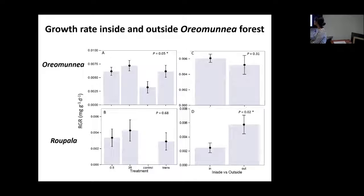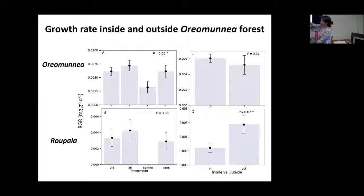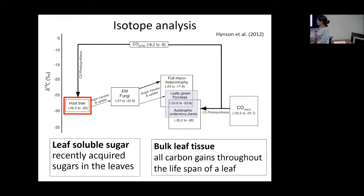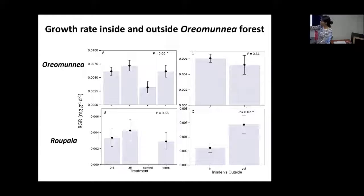What was very interesting was when we compared results inside and outside Oremunia forest: Ropala had a much lower growth rate inside Oremunia forest than outside, while Oremunia didn't show significant differences in growth rate. However, the mortality of Oremunia outside Oremunia forest was very high — so these results are only from seedlings that survived. Basically they had opposite results: Ropala grew really poorly inside Oremunia forest, and Oremunia had very high mortality outside Oremunia forest.